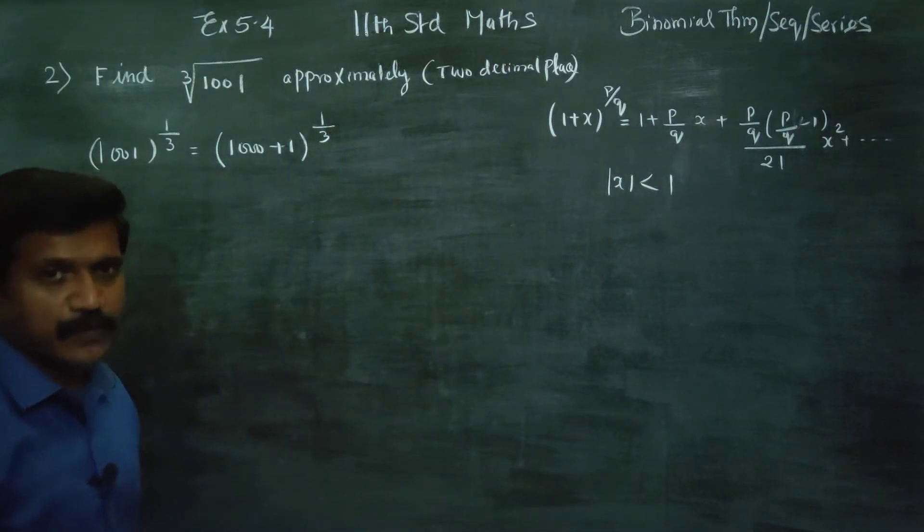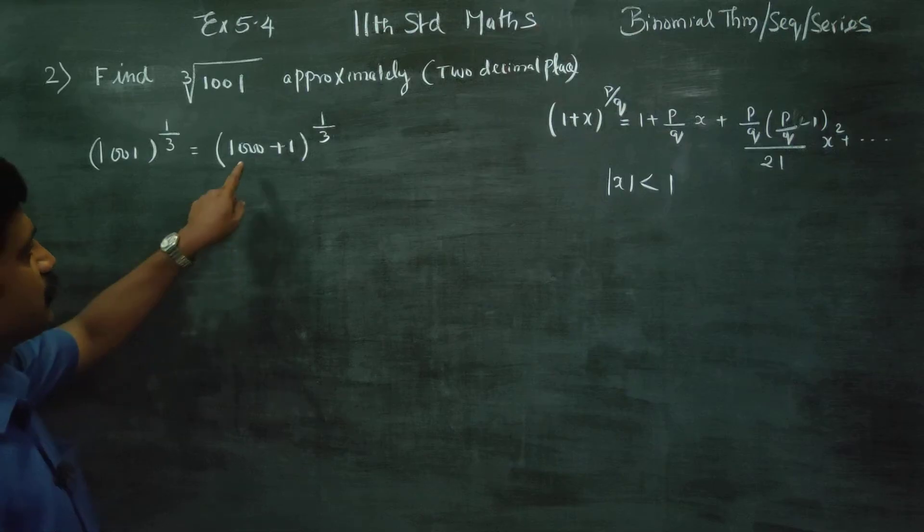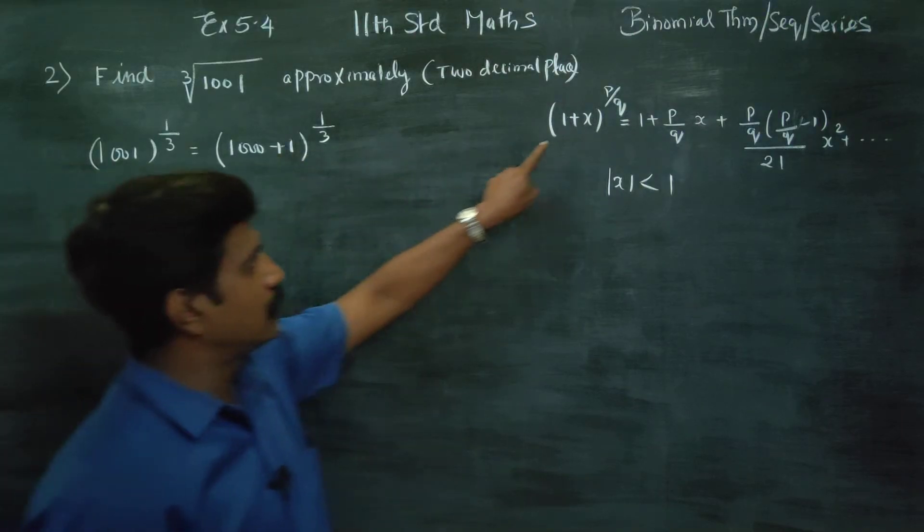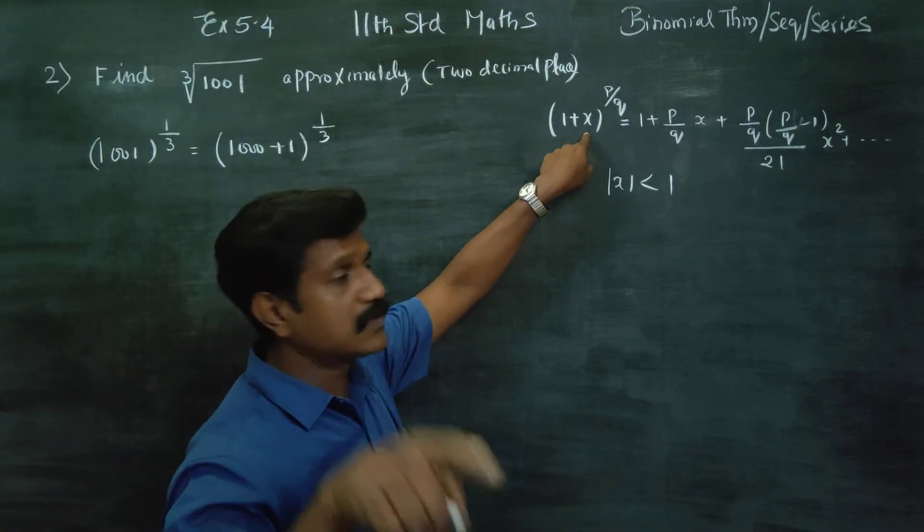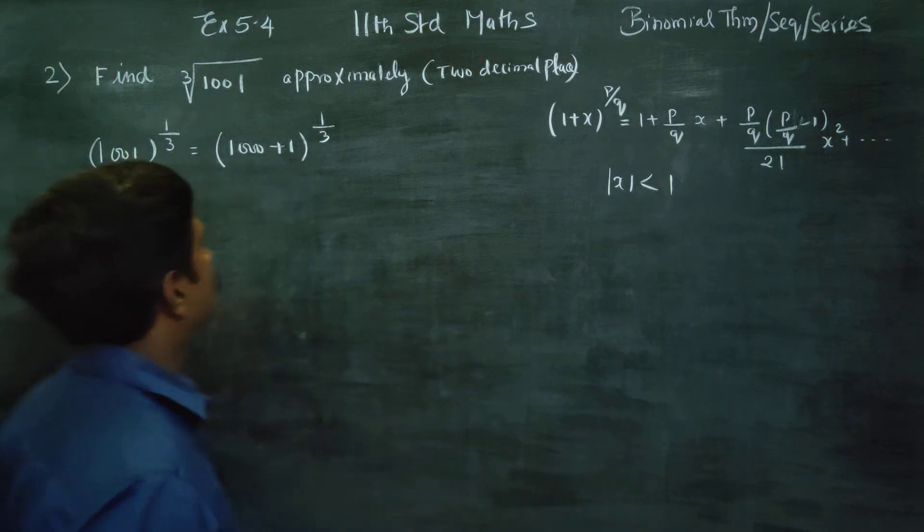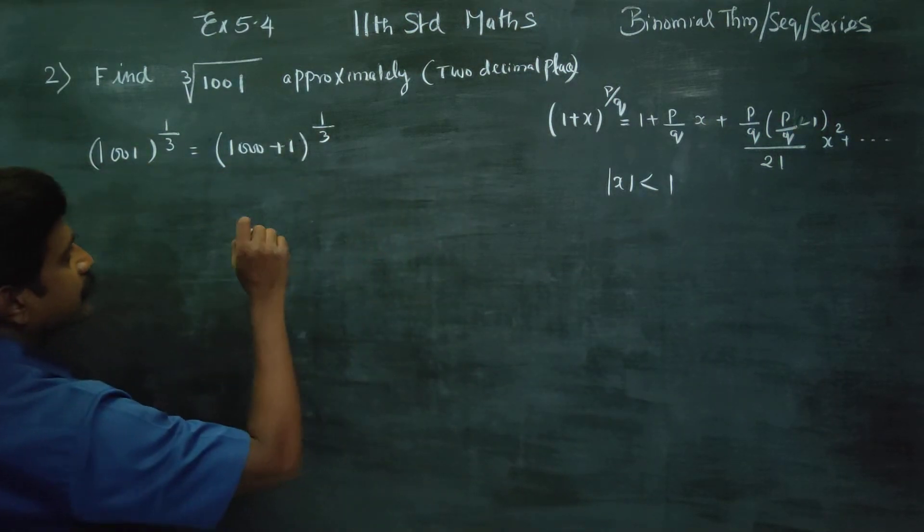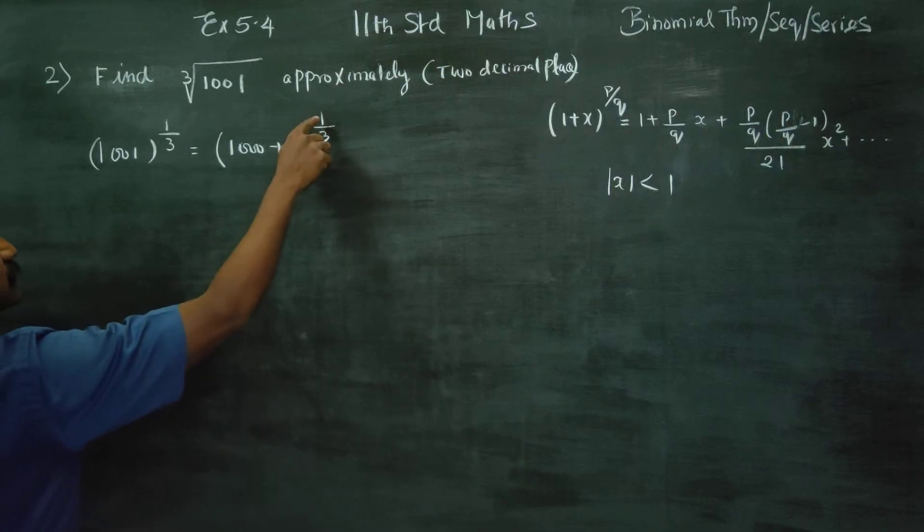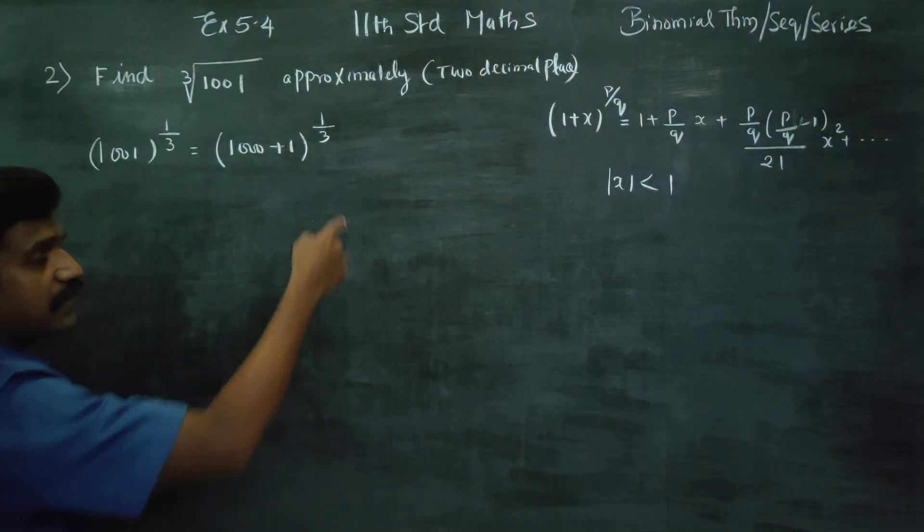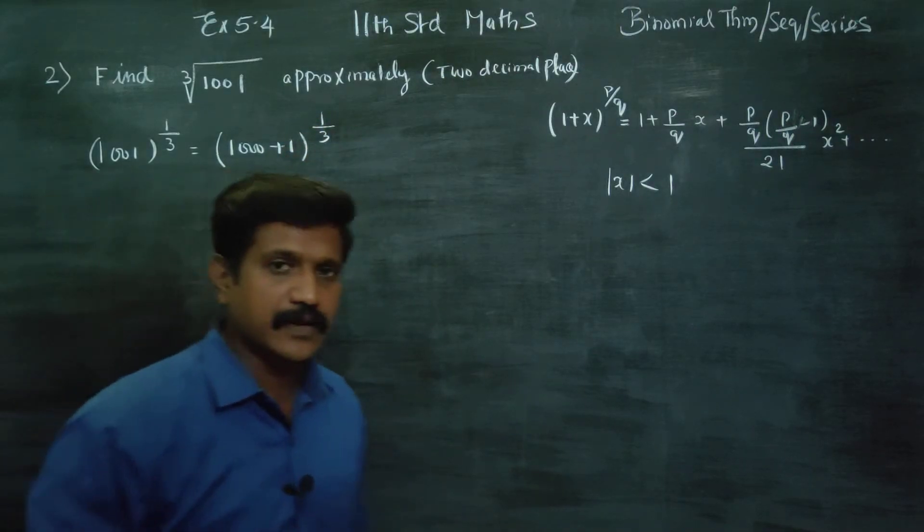In the formula you use, it must be less than 1. 1 is there, less than 1. You can expand this. That's why 1000 plus 1. It's rational index. This is power 2, power 3. We use binomial theorem.